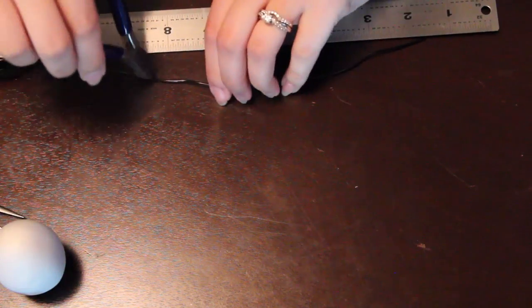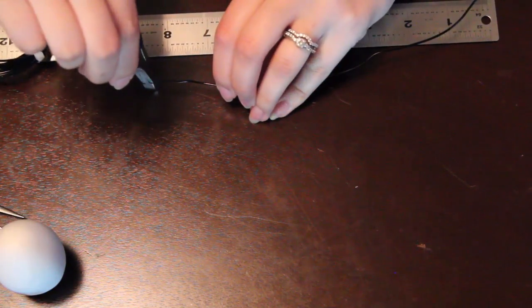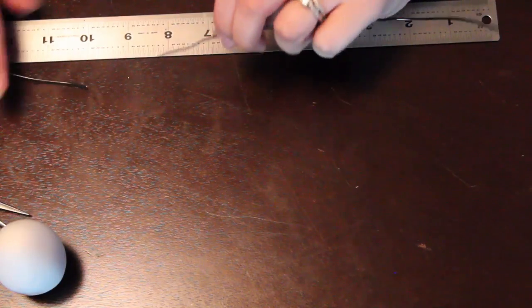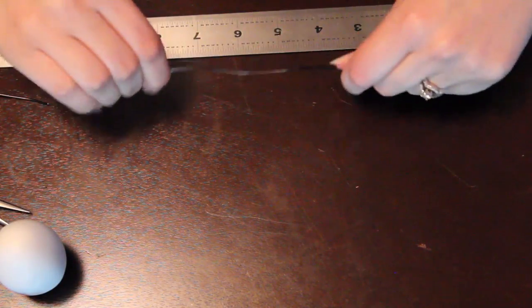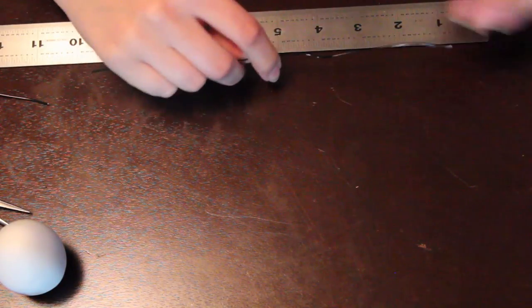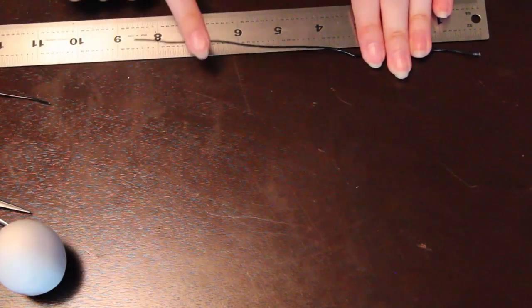So I'm going to grab a piece of the black copper wire that's about eight inches long. It doesn't have to be precise. You can always trim it down later. So make sure to flatten it out, get rid of all the kinks with your fingers.